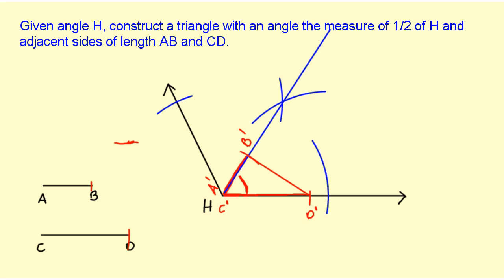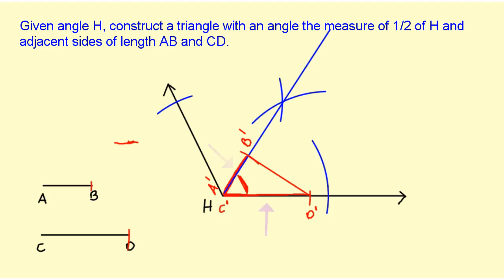To finish my triangle, all I have to do is join B prime to D prime. What I have in red there is a triangle that uses this angle here — which is half of angle H — this side which is the length of AB, and this side which is the length of CD.